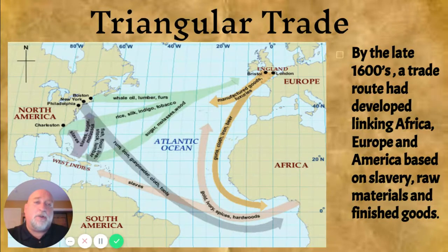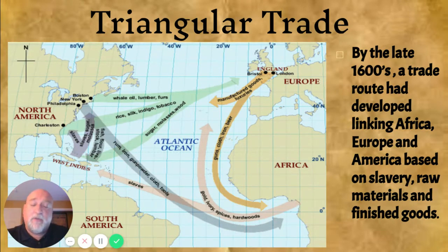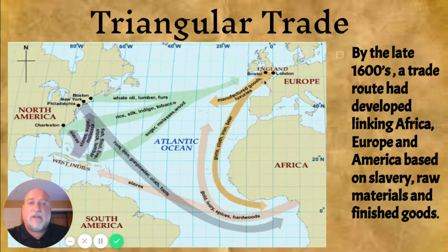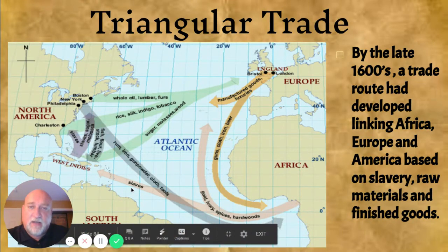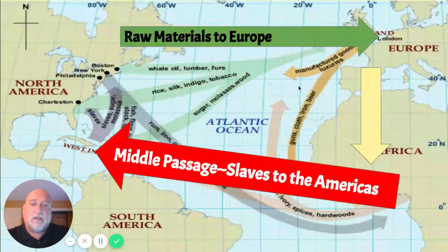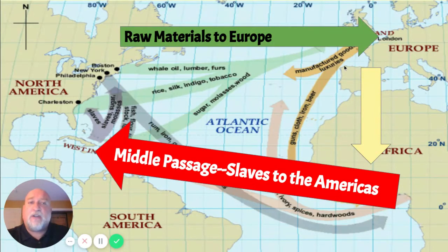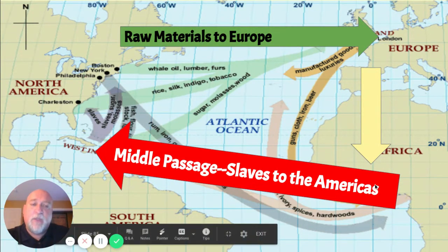There is something called the triangular trade that goes along with this and is a key element. By the late 1600s — about 150 to 200 years after Columbus — a definite trade route was established. If you look at the map, you can see products going from Europe to Africa, products (unfortunately, slaves) going from Africa to the Americas, and raw materials harvested in the Americas going back to Europe, where they were turned into manufactured goods and then sent either back to the Americas or to Africa, where they were traded for slaves.